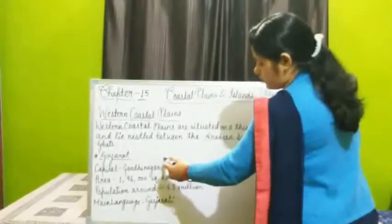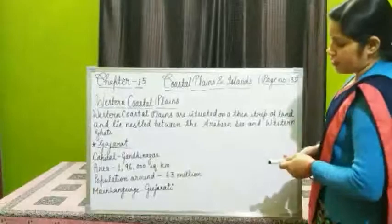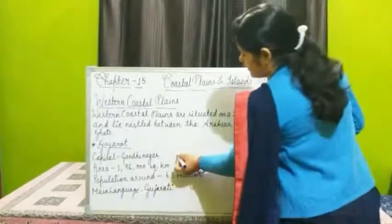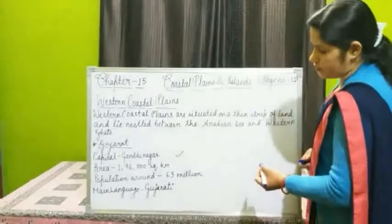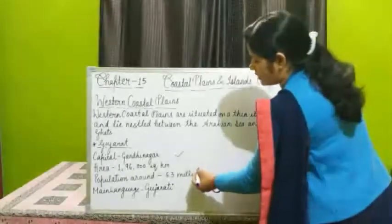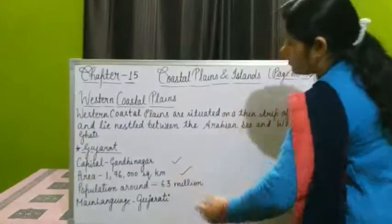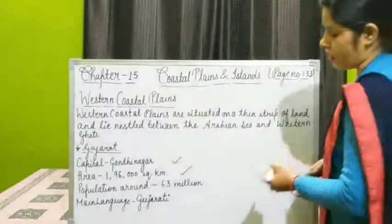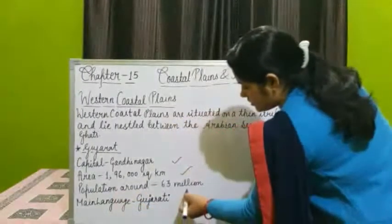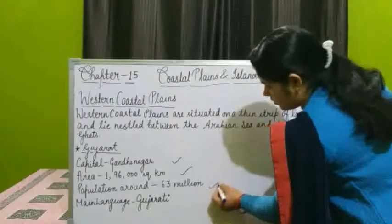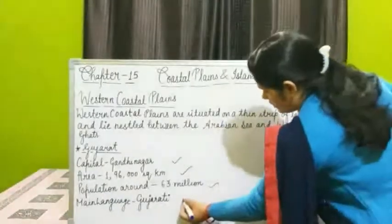First, we will know about the coastal state, that is Gujarat. In short: the capital of Gujarat is Gandhinagar. Total area of the state is 196,000 square kilometers. Population is around 63 million. Main language is Gujarati.